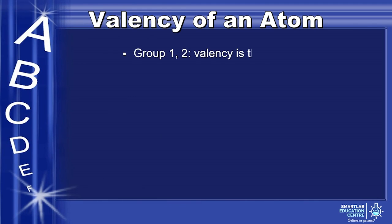For group 1 and 2, valency is the group number. For group 13 to group 18, valency is 18 minus group number.